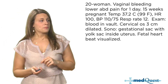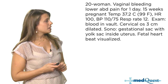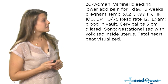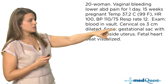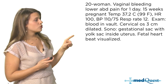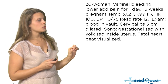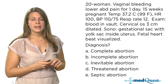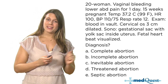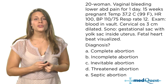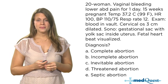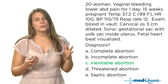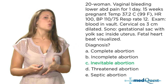Back to a question: you have a 20-year-old woman with vaginal bleeding and lower abdominal pain for one day. She is 15 weeks pregnant and her vitals are listed. On exam, you see blood in the vault and her os is three centimeters dilated. On sonogram, you see a gestational sac with a yolk sac inside the uterus and a fetal heartbeat. What is the diagnosis? The answer is an inevitable abortion.